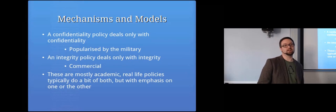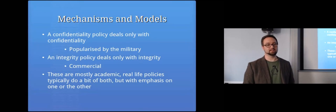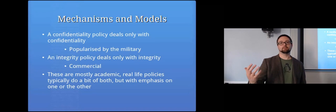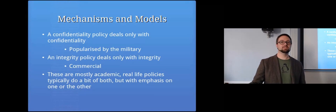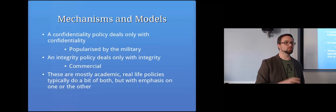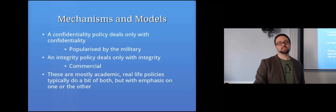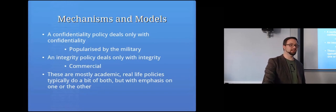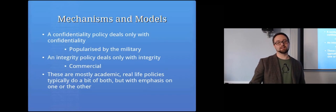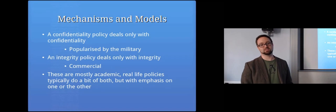A confidentiality policy deals only with confidentiality. Military security systems prioritize keeping things confidential above all — they won't necessarily stop someone from altering information as long as they can't see things they're not supposed to. An integrity policy deals only with integrity — it doesn't matter what people can see, but no one can alter the information. That's often the case in commercial settings. In reality, most people want both, so real-life policies are a mixed model, though usually with emphasis on one.